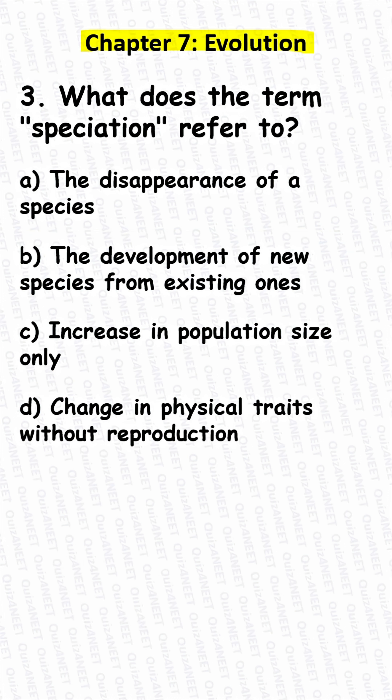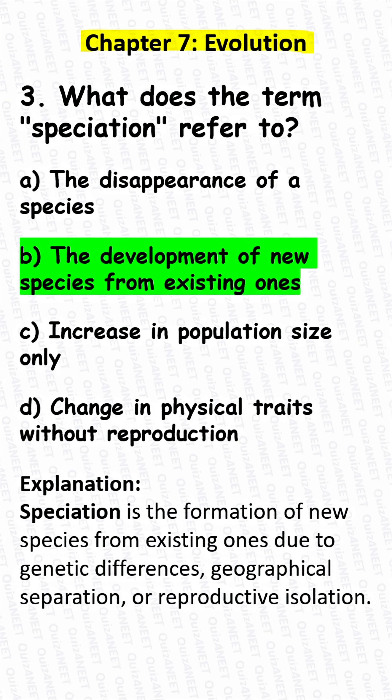Question 3. What does the term speciation refer to? A. The disappearance of a species. B. The development of new species from existing ones. C. Increase in population size only. D. Change in physical traits without reproduction.